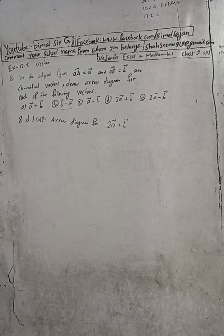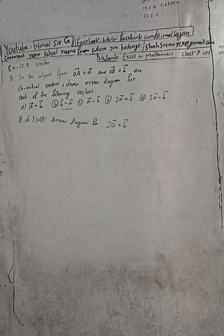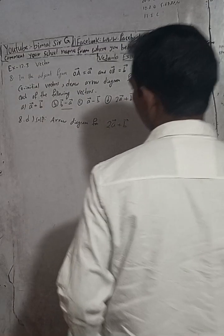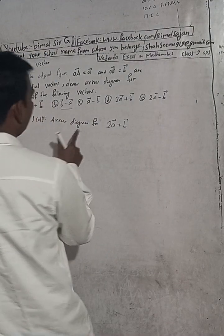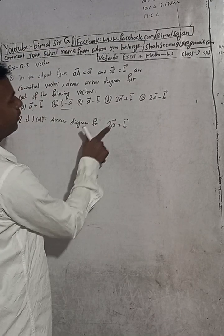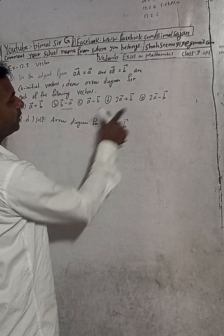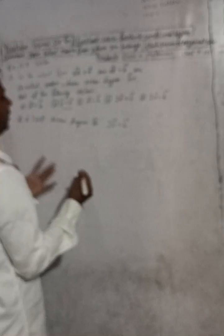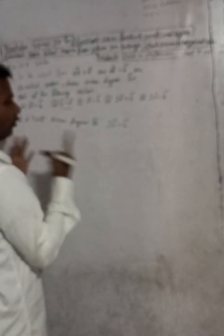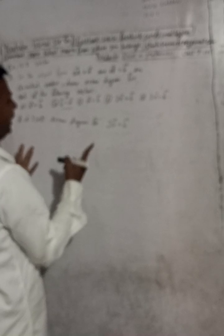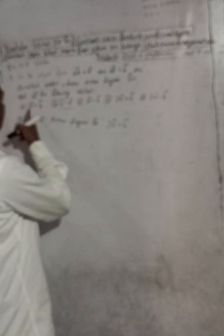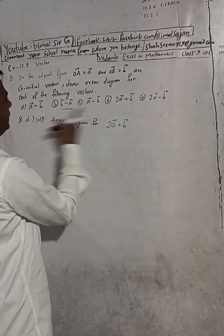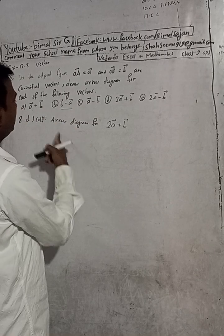This is question number 8D. Now arrow diagram: 2A vector plus B vector. For this question, check the playlist — you will get 8A, 8B, 8C already done. This is D number.